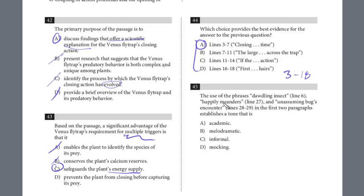Let's do one more question, number 45. The use of the phrases dawdling insect in line 6 and happily meanders in 27 and unassuming bug's encounter in the first two paragraphs establishes a tone that is what? So this is just establishing what's the tone. You can see this is sort of a kind of casual, even though it's a scientific article. Dawdling insect and happily meanders. It's almost kind of like a common vernacular. It's just sort of casual. I think if you just remember from reading these and just seeing these dawdling insect in a scientific passage and happily meanders, this is not academic. Melodramatic. This is not ironic or melodramatic. That's not the tone. Remember, this is an academic passage. It's certainly not mocking. It's just casual. It's just informal. And I don't think that was too difficult. It is C.